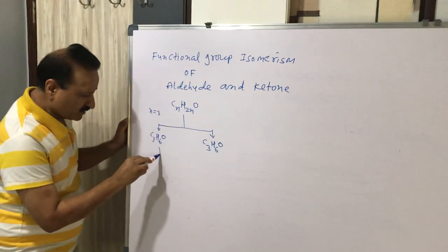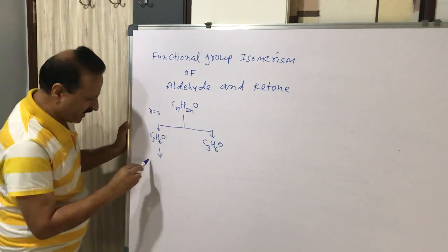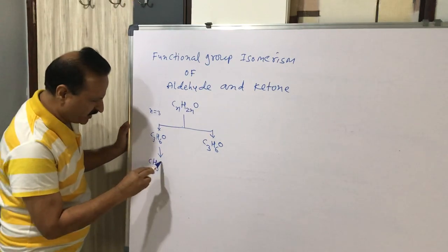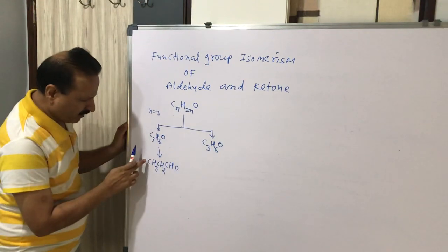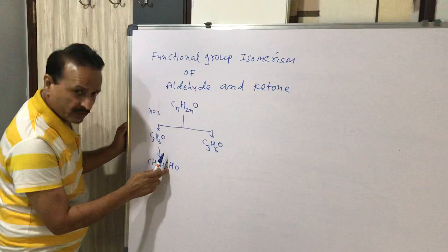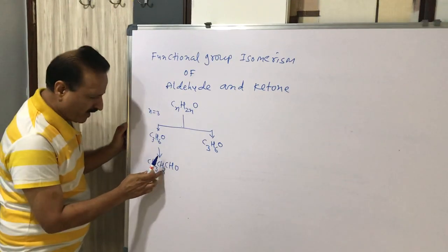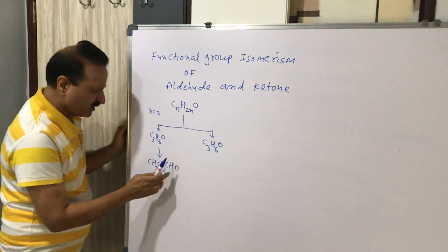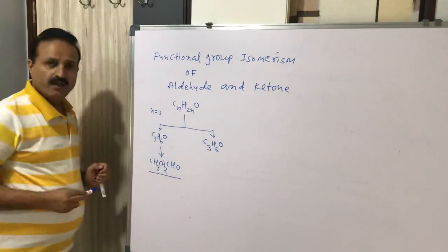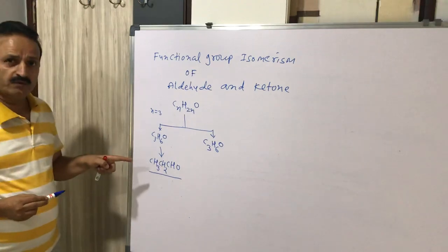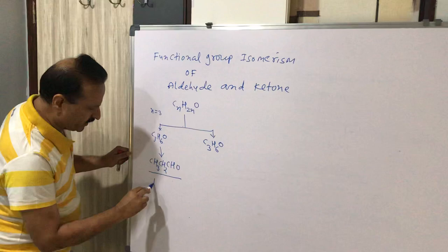From C₃H₆O, we can prepare an aldehyde — that is CH₃CH₂CHO. Here, carbons are 3, hydrogens are 3 plus 2 plus 1 equals 6, and oxygen is 1. This is an aldehyde. There are 3 carbons and it is an aldehyde, so its name is propanal.